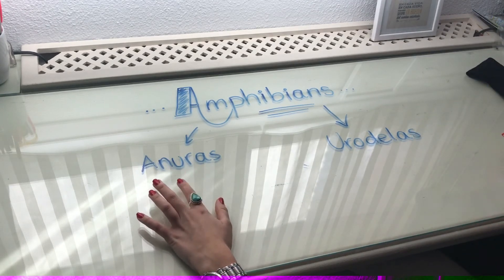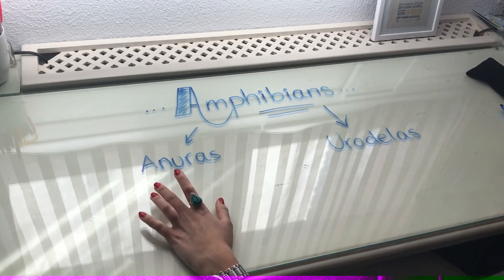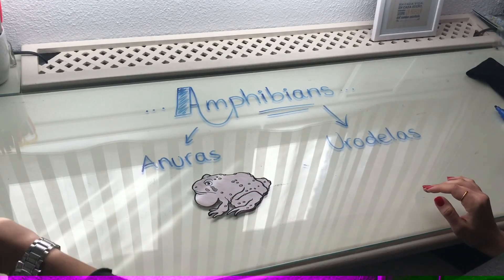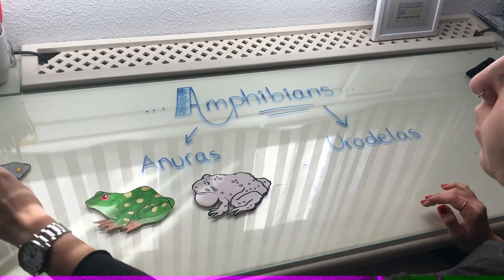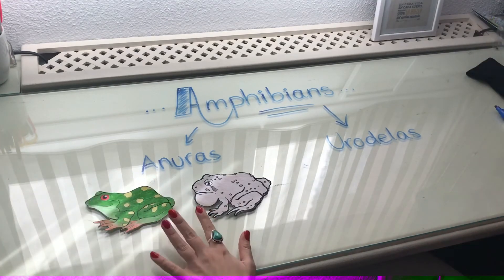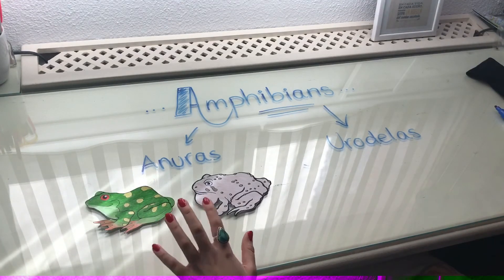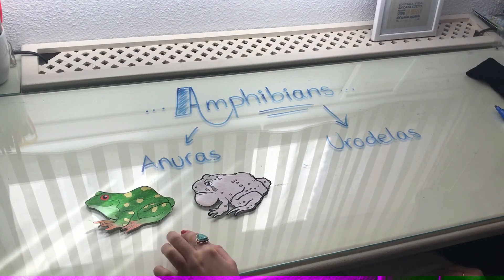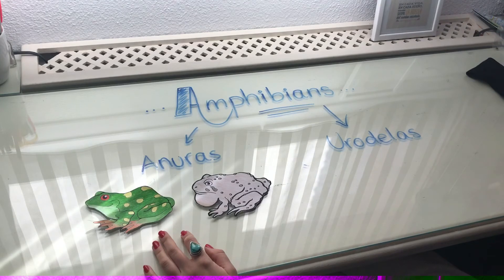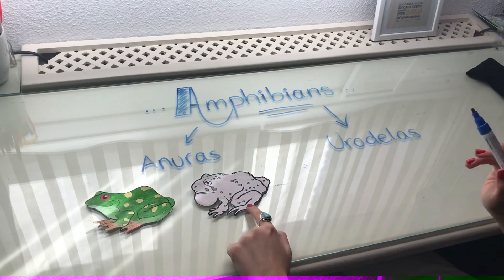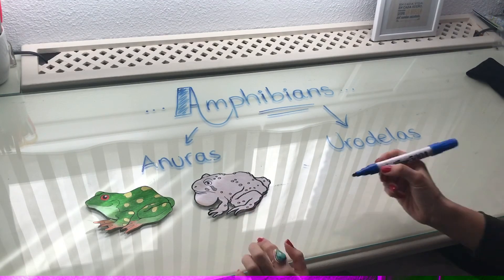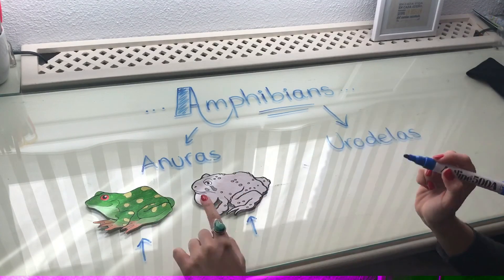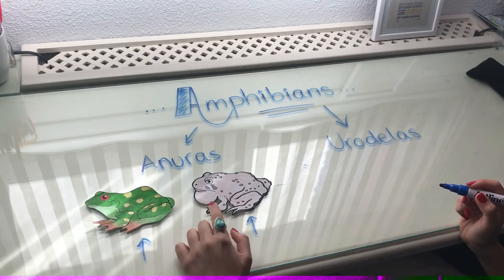The first group — Anurans — is composed of toads and frogs. This group is made up of animals that can jump and swim very large distances, because they use their back legs. As you can see, their back legs are much longer than the front legs, and that's why they can jump and swim for very long distances.